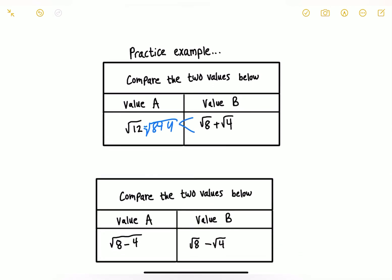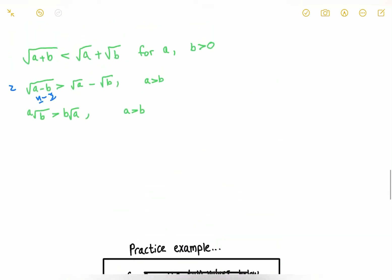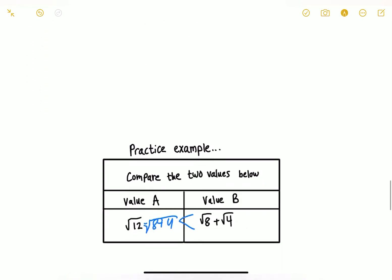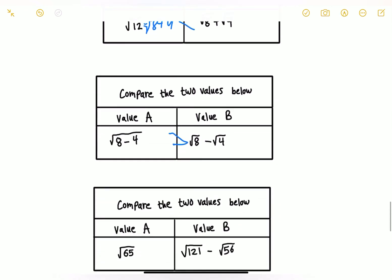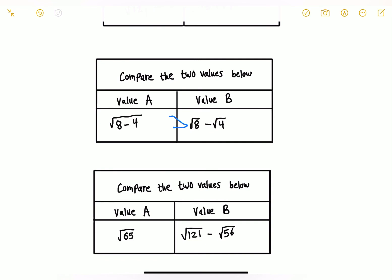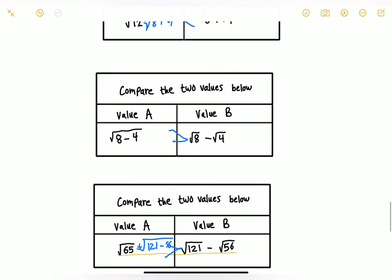The next comparison has a subtraction sign. We have value A and value B. According to our second rule, when we have subtraction, the combined radical form — root of A minus B — is greater than root of A minus root of B. Moving to the next example: radical of 65 is the same as radical of 121 minus 56. By the same rule, the combined form — value A — is greater.